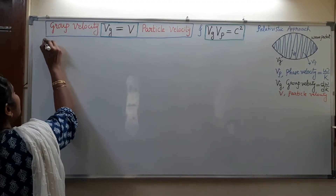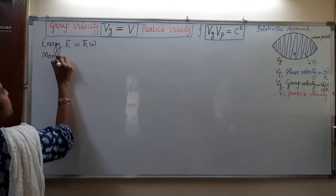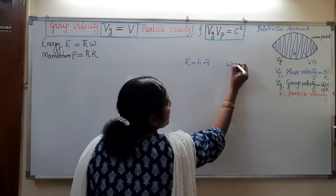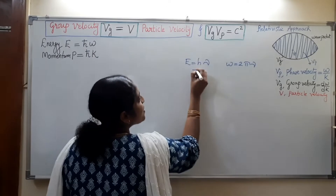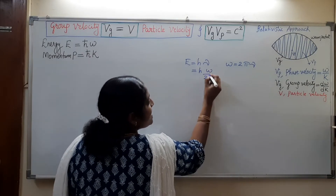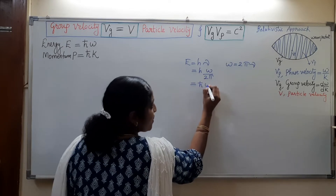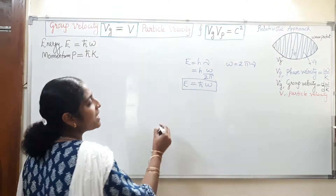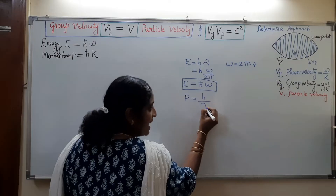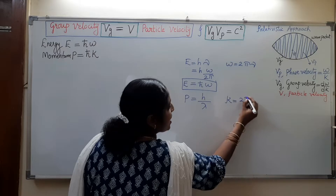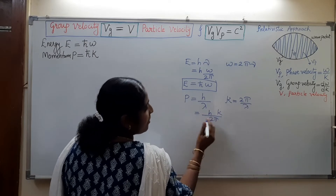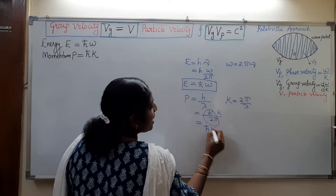Energy E equals h-bar omega, and momentum P equals h-bar k. The relation E equals h-bar omega comes from Planck's equation E equals h nu, where nu is the frequency related to angular frequency by omega equals 2 pi nu. So h nu gives h times omega over 2 pi, and h divided by 2 pi is denoted as h-bar, the reduced Planck's constant. Similarly, P equals h-bar k comes from the De Broglie equation P equals h over lambda, where k equals 2 pi over lambda, giving P equals h-bar k. These two equations are very important in quantum mechanics.